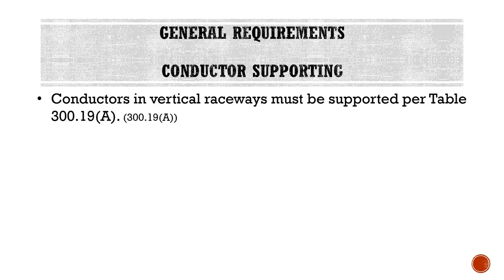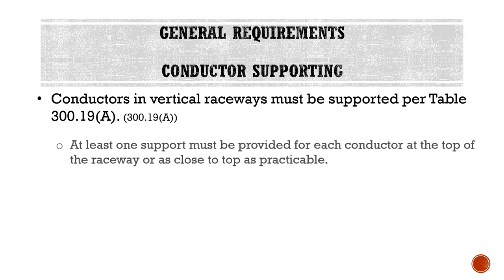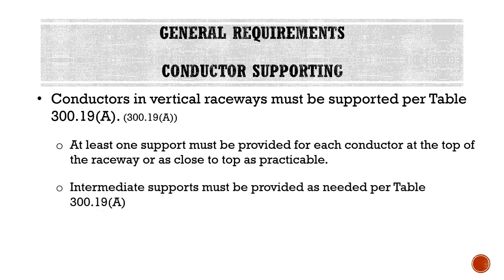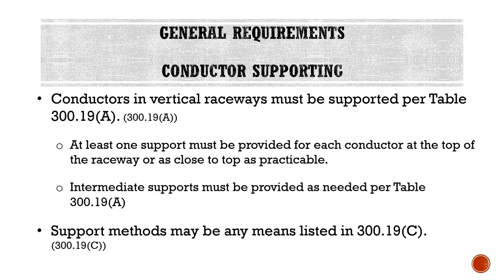For our last topic, we're going to talk about conductor supports. Conductors in vertical raceways must be supported per Table 300.19A. Obviously, if we have a conduit running straight up vertically for 100 feet, gravity wants to pull those conductors down. At least one support must be provided for each conductor at the top of the raceway or as close to the top as practical. Intermediate supports must be provided as needed per Table 300.19A, and support methods may be any means listed in 300.19C.